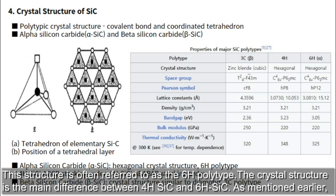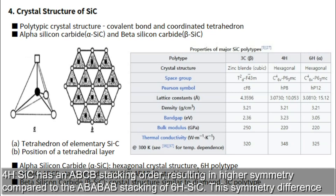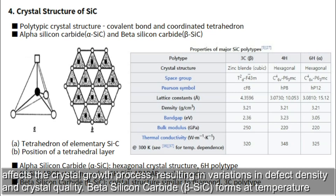As mentioned earlier, 4H-SiC has an ABCB stacking order, resulting in higher symmetry compared to the ABABAB stacking of 6H-SiC. This symmetry difference affects the crystal growth process, resulting in variations in defect density and crystal quality.